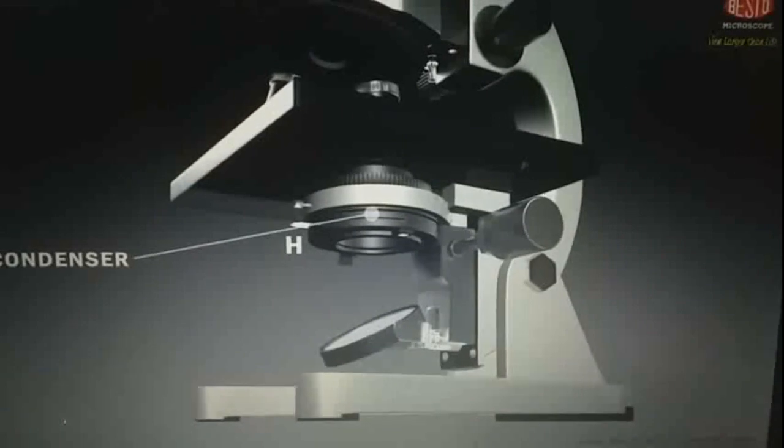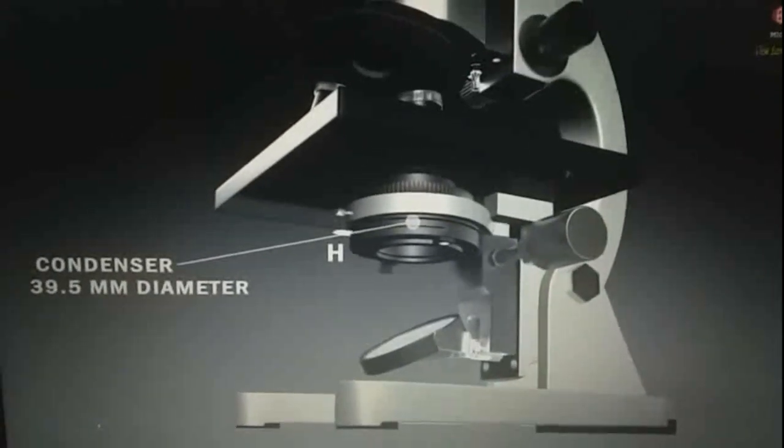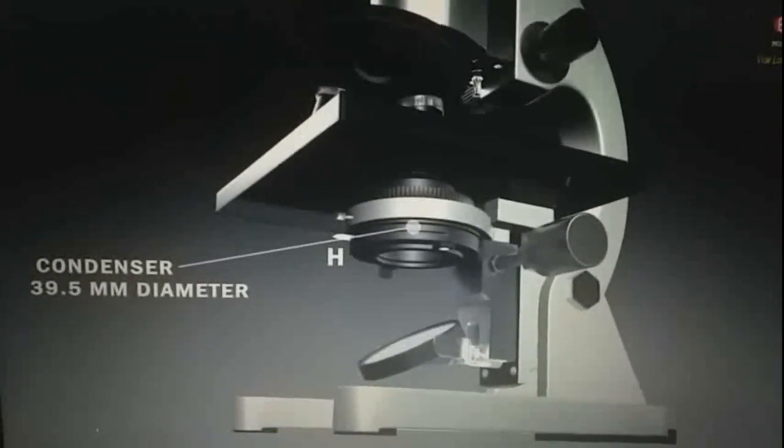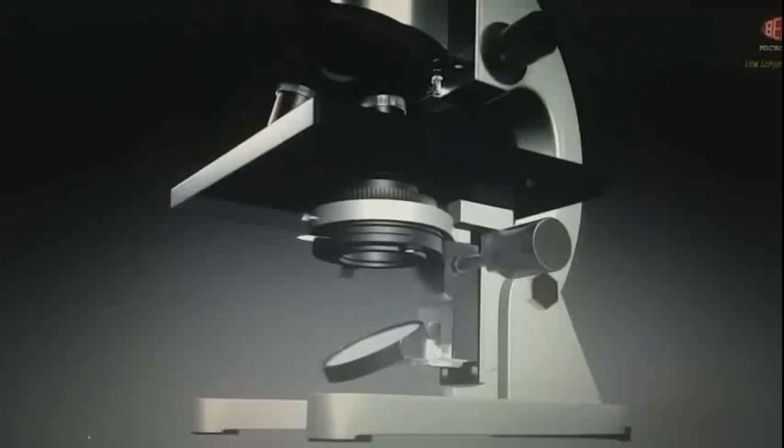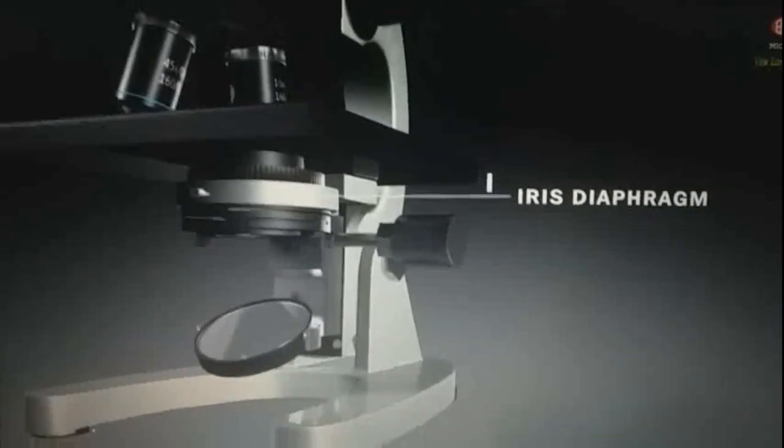H, condenser. Beneath the stage microscope have a condenser having standard diameter of 39.5 mm which collects and concentrates the light before it passes through the sample.